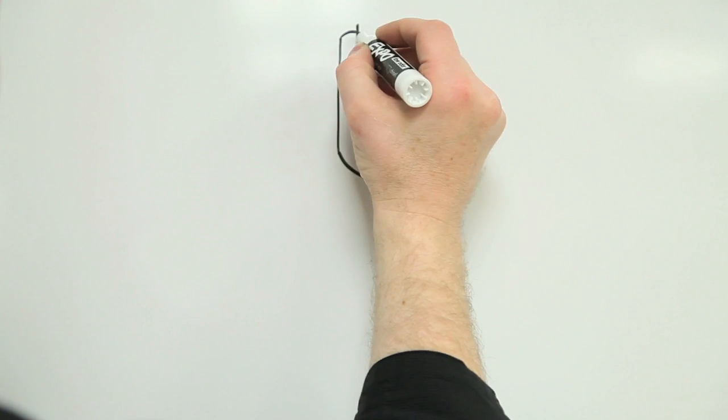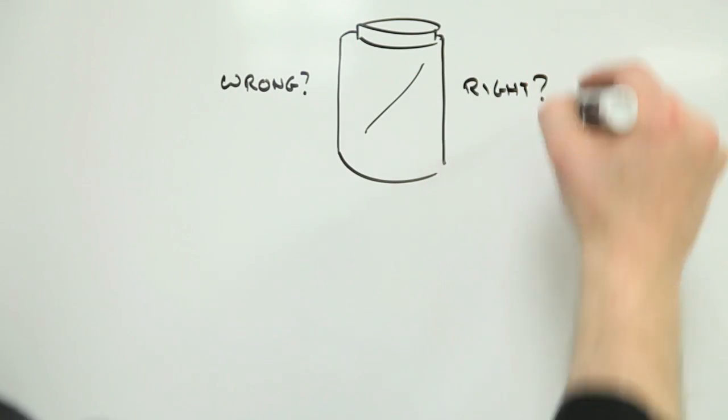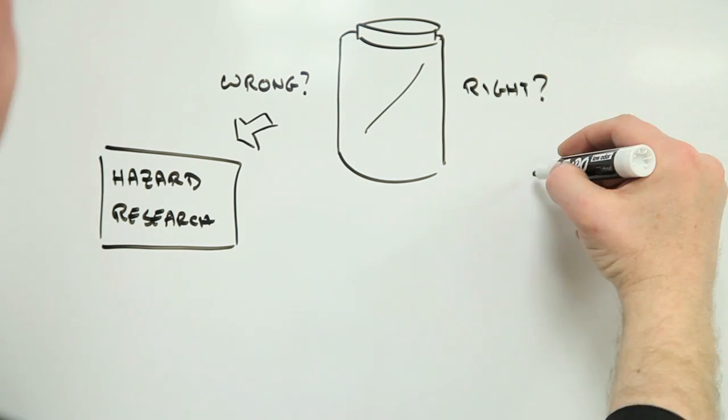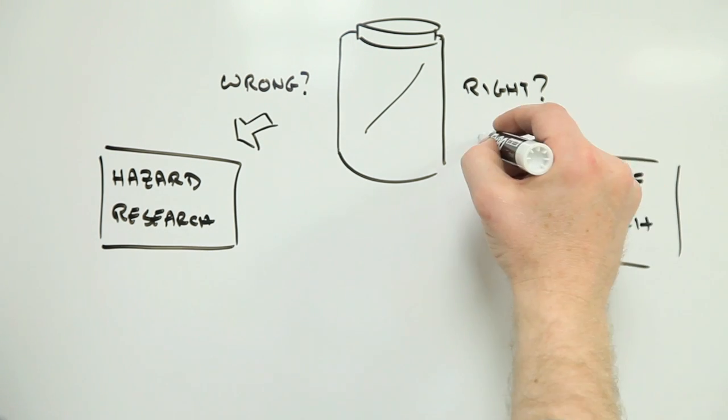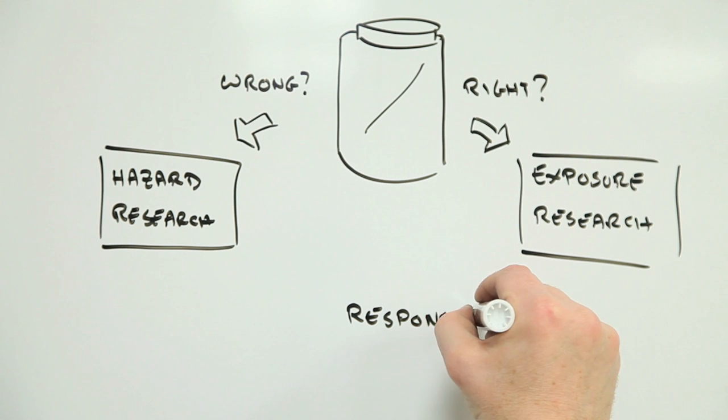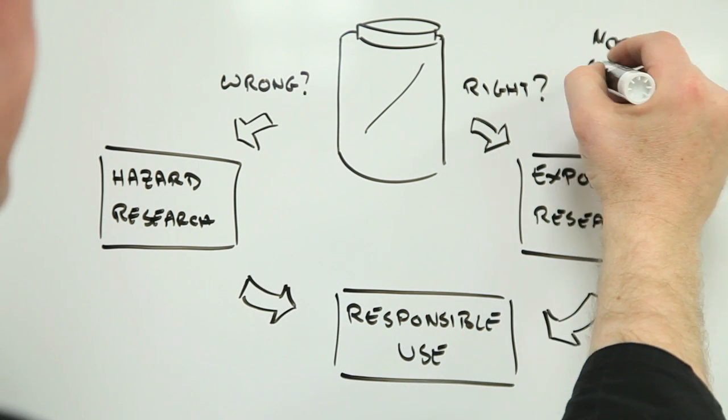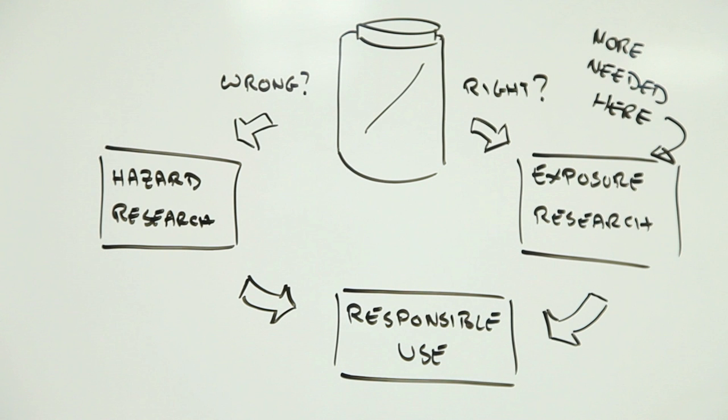As we learn more about what makes carbon nanotubes toxic, what do we need to do to understand more about who is likely to be exposed to what, and how exposures can be reduced to acceptably safe levels? Because without this, the responsible development and use of carbon nanotubes is going to be tricky, to say the least.